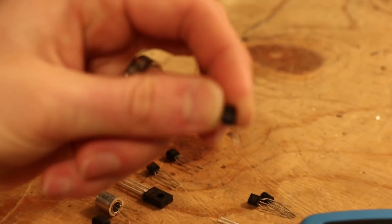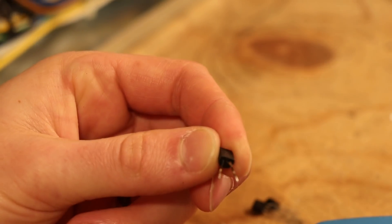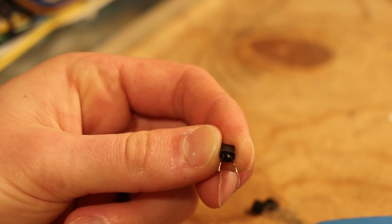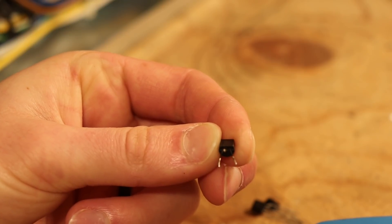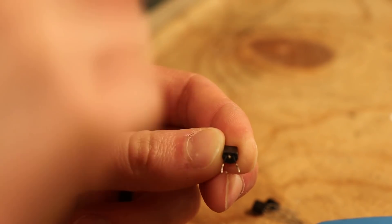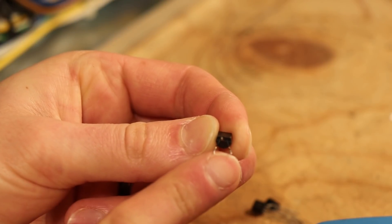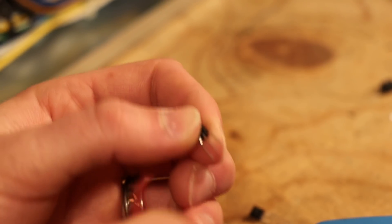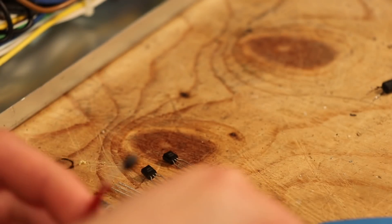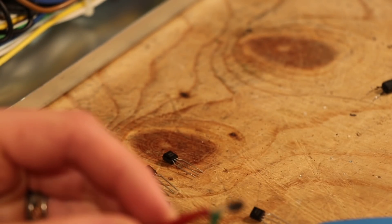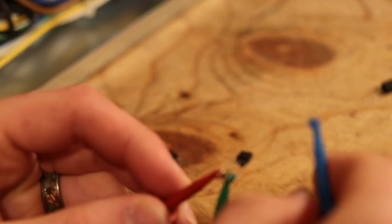So, if you look at the transistor, I'll do my best to get the camera to cooperate here. If we have the leads coming out facing us, and the flat spot going up, we've got B, we've got C, and we've got E, base collector emitter. So, let's hook up a new KSA-992 with red, green, and blue.